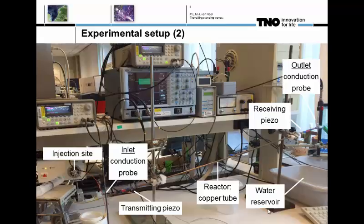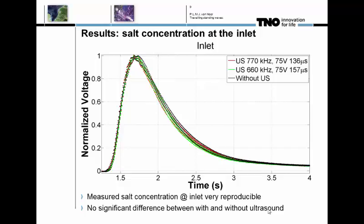Looking at the first results — the salt concentration at the inlet — the y-axis shows normalized voltage, which is linear with the salt concentration, and the x-axis shows time in seconds. The black line shows the salt concentration measured when there was no sound present, and the red and green lines show it when the sound was on. The dots around the curves show standard deviations based on 10 measurements. The first conclusion is that the results are really repeatable, and the second is that there is no significant difference at the inlet whether the sound is on or off.